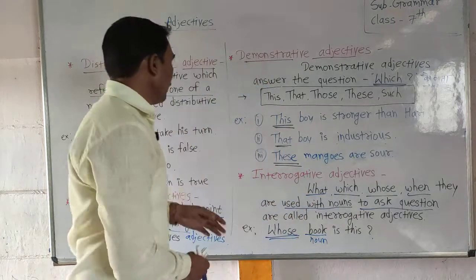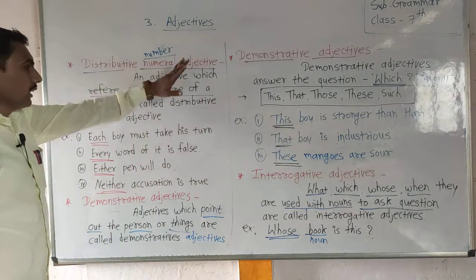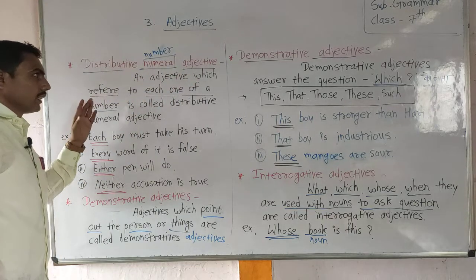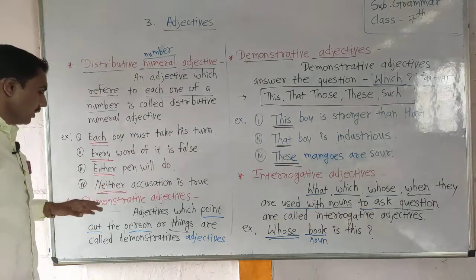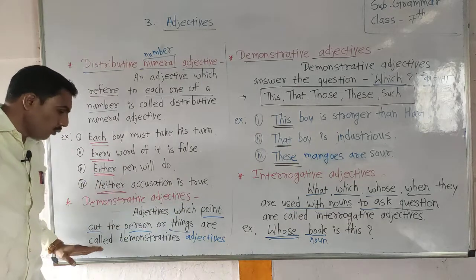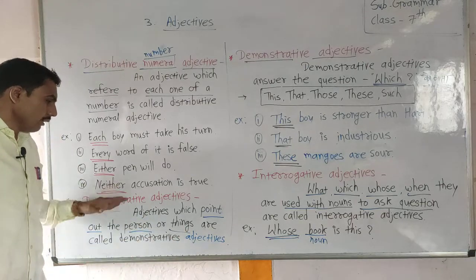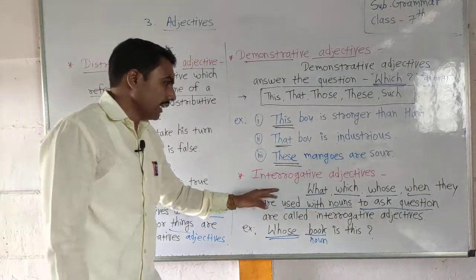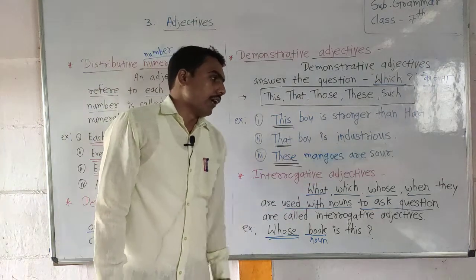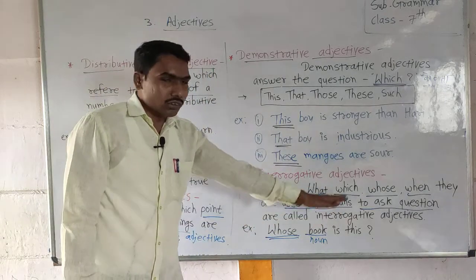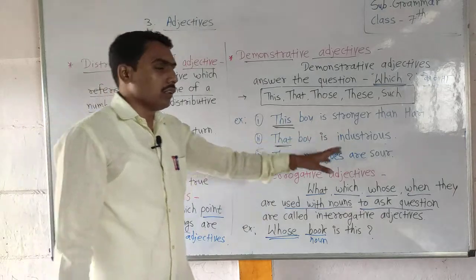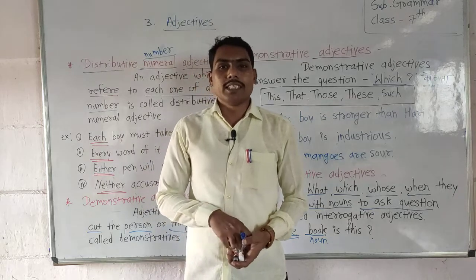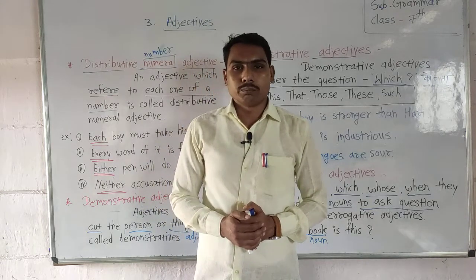In today's class we learned: distributive numeral adjectives — which refer to each one of a number; demonstrative adjectives — which point out a person or thing, such as this, that, those; and interrogative adjectives — what, which, whose, when — used with nouns to ask questions. The remaining part of this lesson we will see in the next video. Thank you.